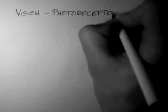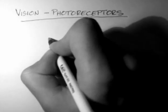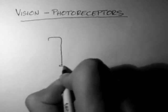In this video, I'm going to talk about photoreceptors. The photoreceptors are located within the retina. This is the very back of the eye. So I'll just draw one out here.